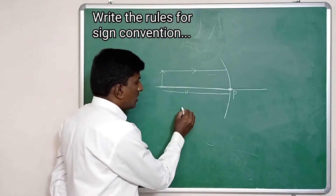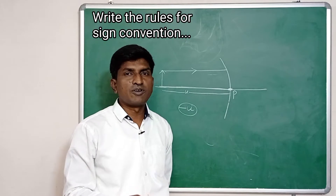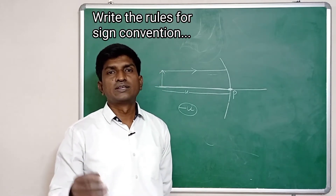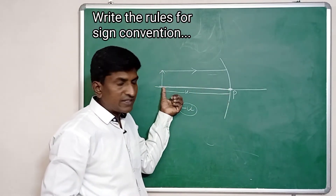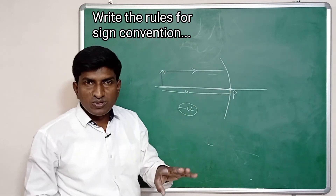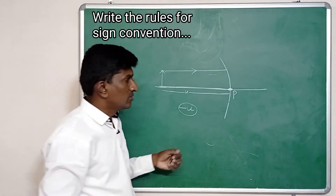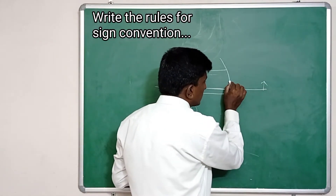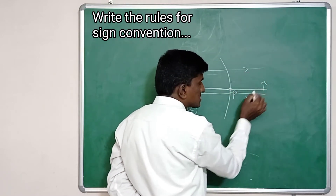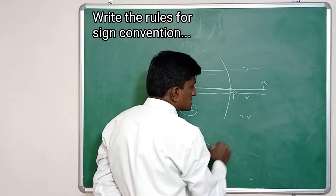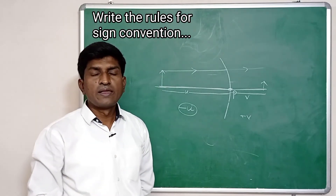We are moving opposite to the incident light ray — the incident light ray is towards the right side and we are measuring towards the opposite direction. So the distance of the object is taken as negative. Any distance — object distance, image distance, focal length, radius of curvature — measured in the direction of incident light ray is positive; measured opposite to it is negative.